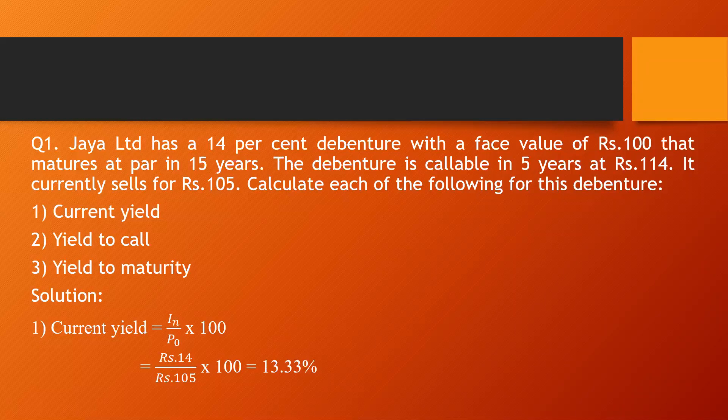Current yield is the second type of return. Current yield is the comparison between the interest received annually and the current market price of the bond. We calculate the current yield by comparing the current market price and the interest of the bond. The formula to calculate the current yield is: annual interest divided by current market price, multiplied by 100.